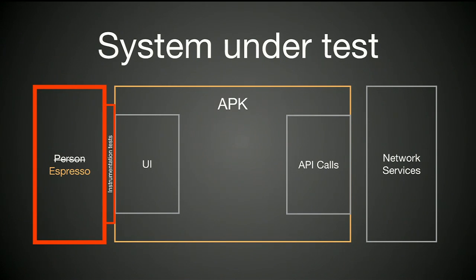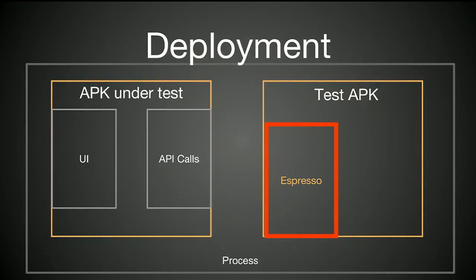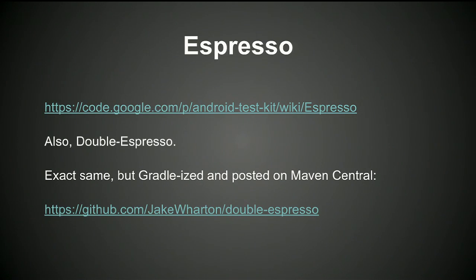That was a brief introduction to instrumentation tests. Now, how does Espresso fit on top? From a deployment point of view, you have one process on the Android device. Your APK under test has a UI and is probably making API calls to a network. Espresso is in a test APK, but at runtime the platform combines the classpath and memory space of both — they run in the same VM. Espresso is available here, and if you're using Gradle there's a thing called Double Espresso, a Gradleized version posted on Maven Central, which is a little easier to consume.